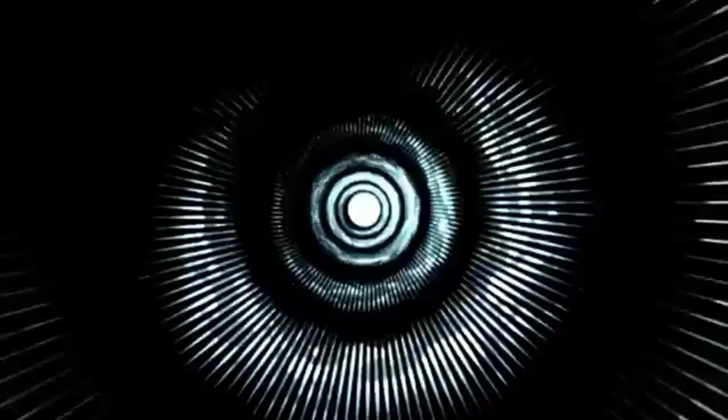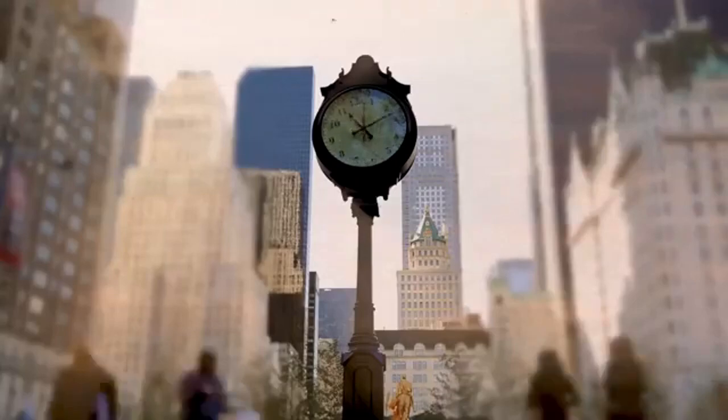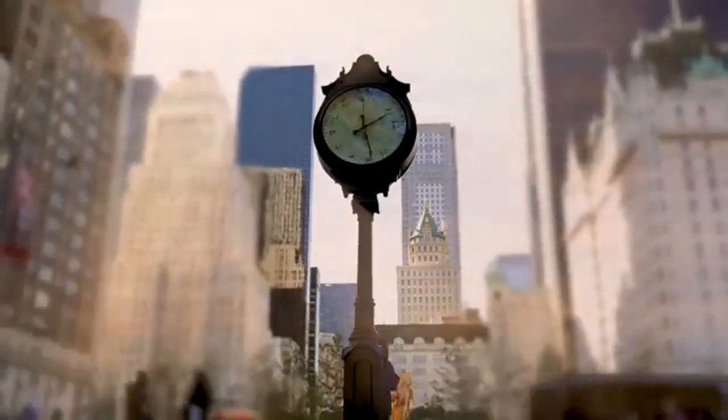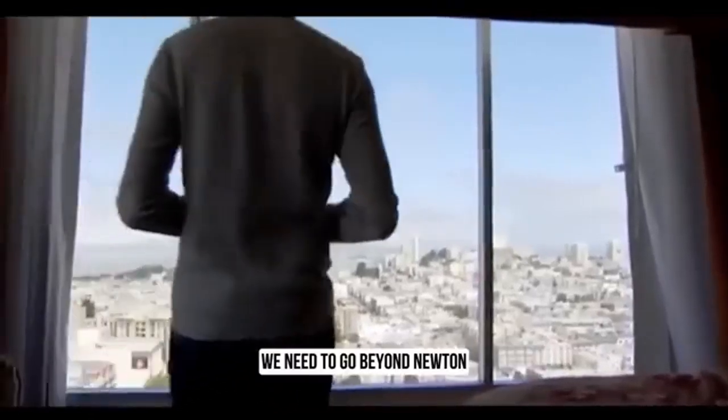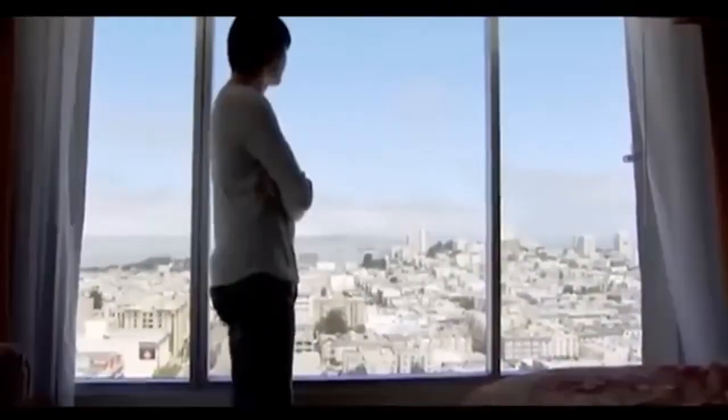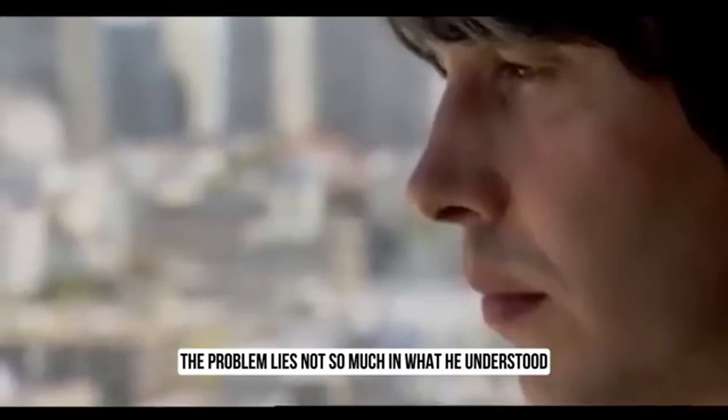Albert Einstein, a name known to many, gave us a new perspective on the universe with his theories of relativity. His work laid the foundation for understanding how time behaves under different conditions, particularly when we travel at extreme speeds. It all began in the early 20th century when Einstein proposed two groundbreaking theories: the special theory of relativity and the general theory of relativity.